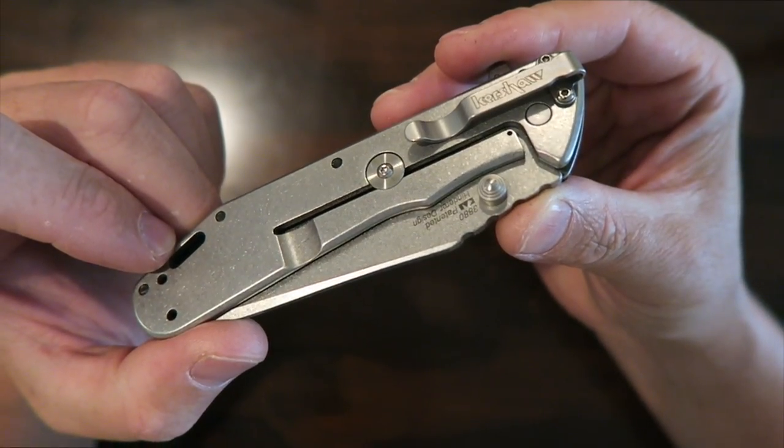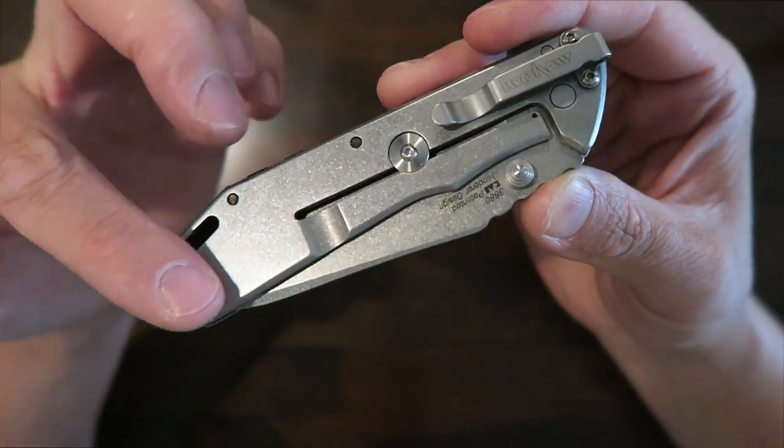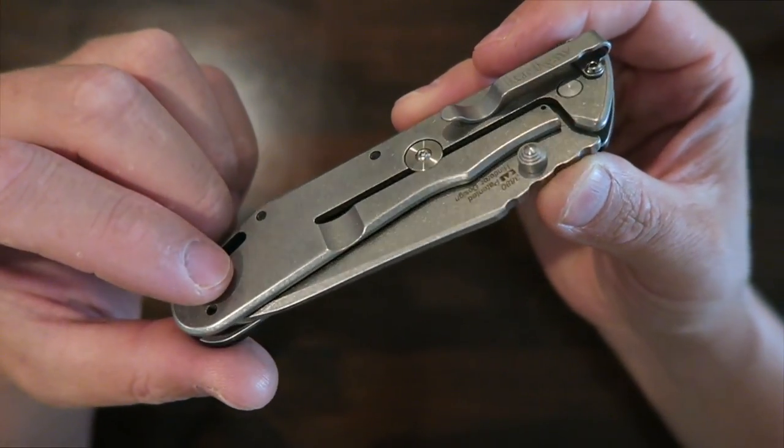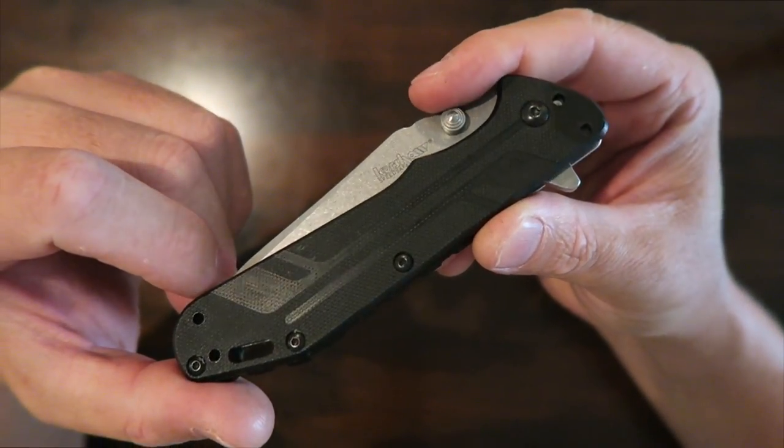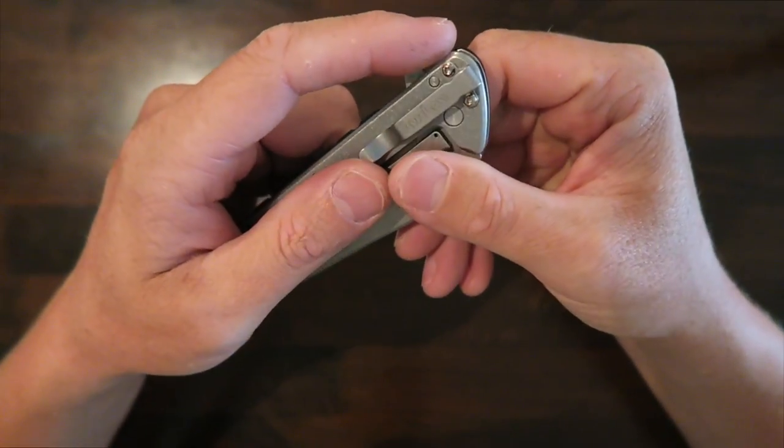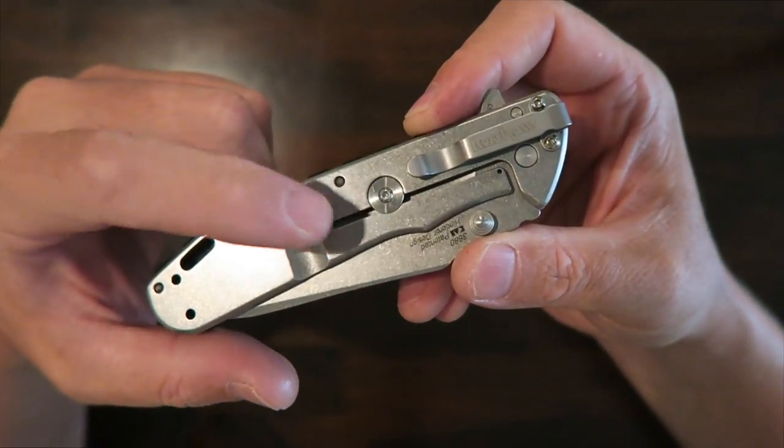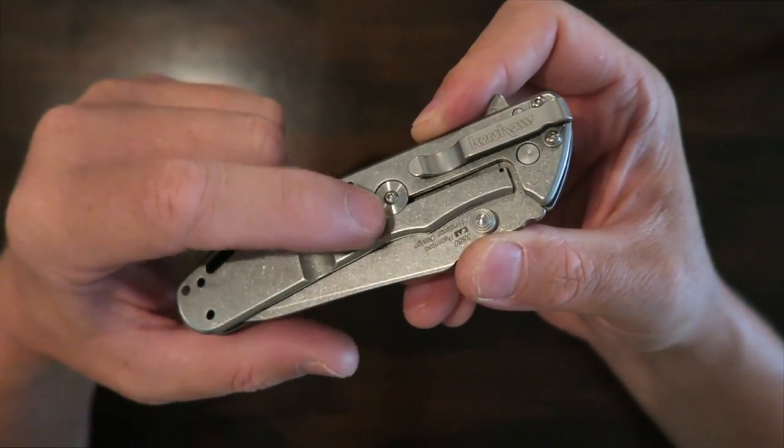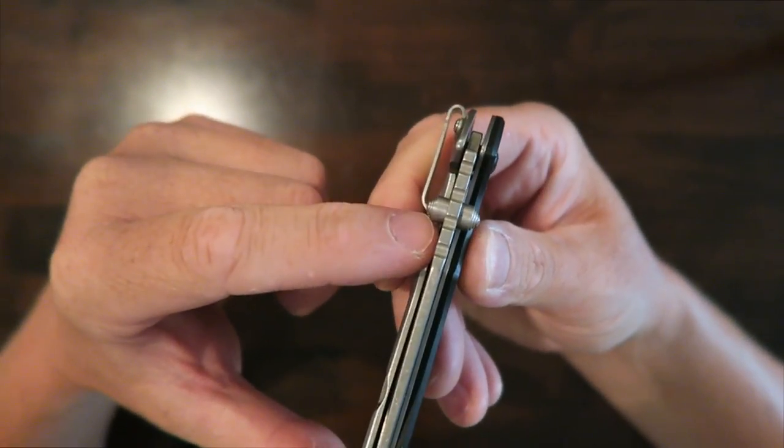First up we have the Thermite. Now I've done a video review on this before. It's got awesome 410 stainless handle on this side and then it's got a G10 handle on the reverse side. Flipper opener. It's got a deep carry pocket clip, which is nice. This is a Rick Hinderer design. So it's got the lock bar stabilizer there. Frame lock, dual thumb studs.